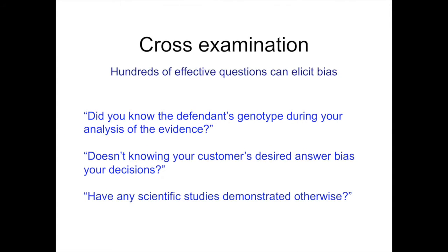In cross-examination of an expert DNA witness, hundreds of effective questions can elicit bias. For example, one can ask: 'Did you know the defendant's genotype during your analysis of the evidence?' — this is usually true. One can follow up: 'Doesn't knowing your customer's desired answer motivate your decisions?' They may say yes or no, but the point is made before the jury. Finally: 'Have any scientific studies demonstrated otherwise?' — no, of course not, but the possibility of bias is now visible to the jury.